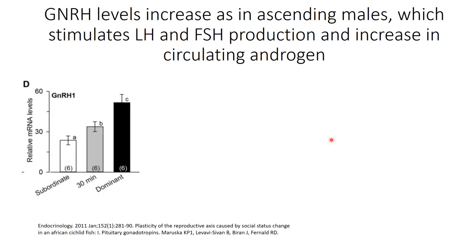GnRH levels increase in these animals, leading to an increase in LH and FSH production. In studies from Russ Fernald's lab at Stanford, animals were killed 30 minutes after lights on — comparing subordinate, ascending (30 minutes), and dominant animals. Within 30 minutes, the expression of GnRH was already significantly higher than in subordinates, but not quite as high as in established dominants. So there's a surge in GnRH happening in the brain — GnRH is being turned on.